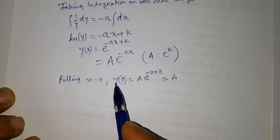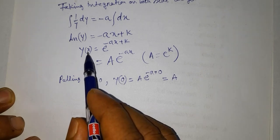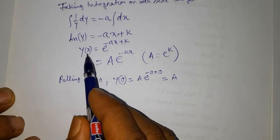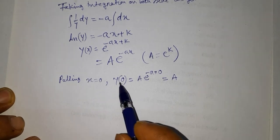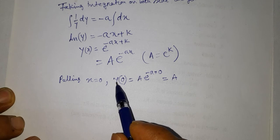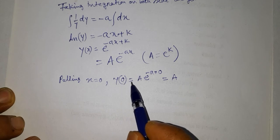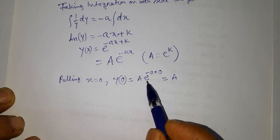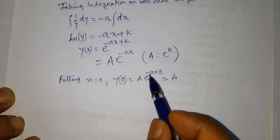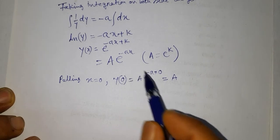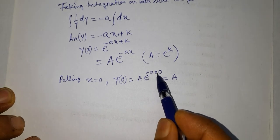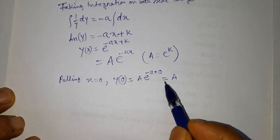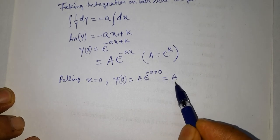Now, putting x = 0, we get y(0). In place of x we write 0, so y(0) = A · e^(-a·0), so that is equal to A.